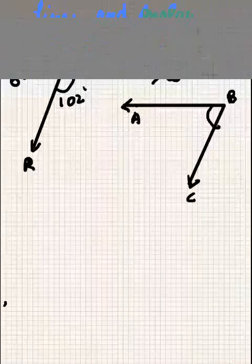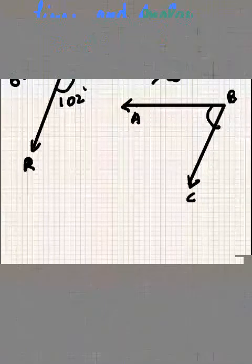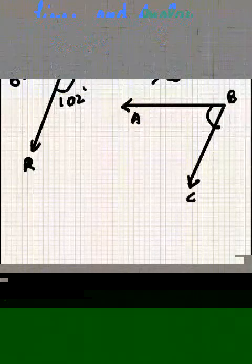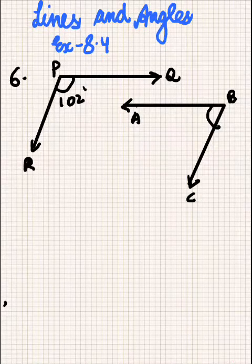Welcome everyone. We are on RD Sharma class 9, Lines and Angles chapter, Exercise 8.4, question number 6, which says that PQ is parallel to AB and PR is parallel to BC. If angle QPR is 102 degrees, determine angle ABC. Give reasons.